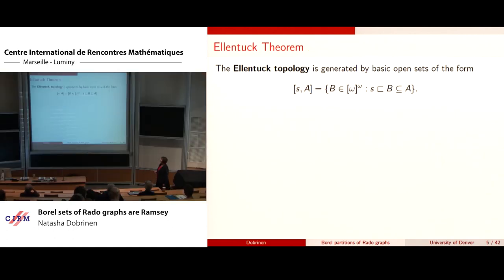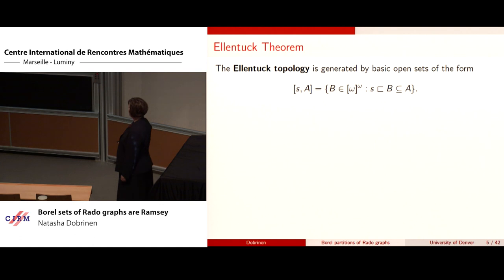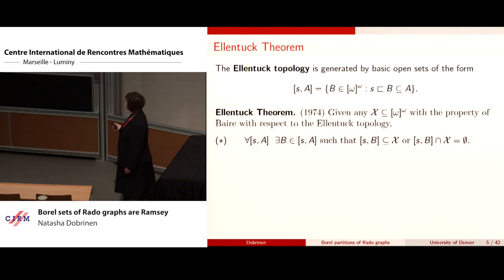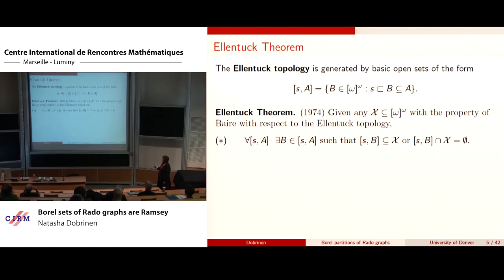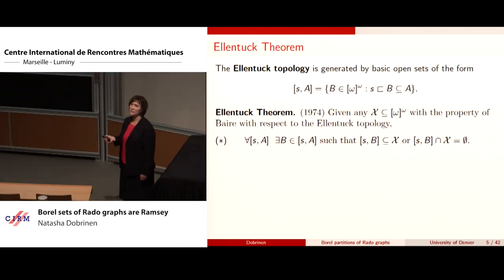The Ellentuck topology is generated by basic open sets — you may know it as Mathias forcing — where you look at a finite head, an infinite tail, and all infinite subsets of A which end-extend S. This gives a refinement of the metric topology. Ellentuck's theorem says that any collection of infinite subsets of ω with the property of Baire with respect to this refined topology satisfies the star condition: for every basic open set, you find some end-extension of S into A so that this basic open set is either contained in X or disjoint from X.